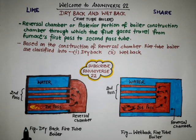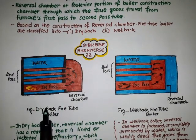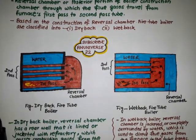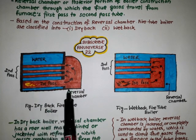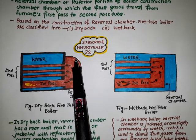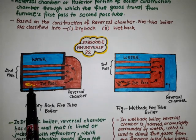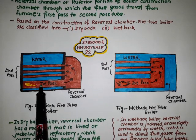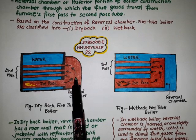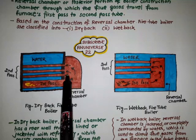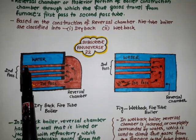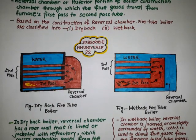Here we can see the diagram of the dry back fire tube boiler. It has a reversible chamber at the rear wall that is lined or jacketed with refractory, which passes the combustion gases. This is the furnace through which the flue gases come first. They are collected in the reversible chamber, and from the reversible chamber in the second pass, these gases move into the tubes. The red color indicates the flue gases and the blue color indicates the water.